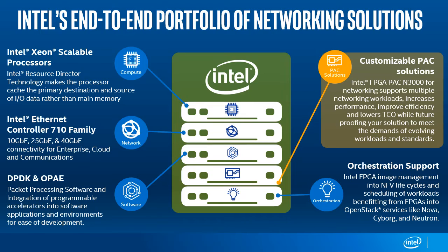Intel offers a host of networking solutions to help comms service providers deploy their 5G networks. Intel offers Xeon scalable processors for compute, 710 NIC family for connectivity, and open-source software for packet processing. With the addition of the new customizable FPGA PAC, we leverage open-source software such as PDK and Open Programmable Acceleration Engine, or OPAE, along with orchestration software optimized to support this FPGA SmartNIC platform. The PAC N3000 for networking accelerates multiple workloads, and with the Intel FPGA PAC N3000, our customers have access to customizable hardware with industry-standard tools as part of Intel's overall networking solution portfolio.